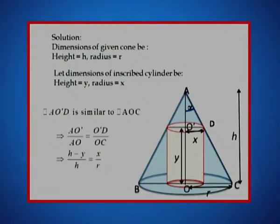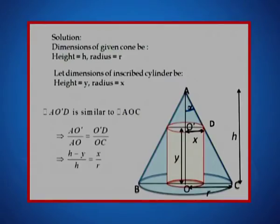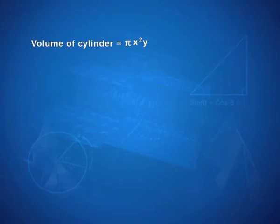Replace them with their measurements. In this case, here AO' is same as AO minus OO' and therefore, it is h minus y upon h equal to x by r. This gives rise to y in terms of x. Again, reminding you, h and r are constants. So, y is now in terms of x and therefore, we are ready to write the volume function.